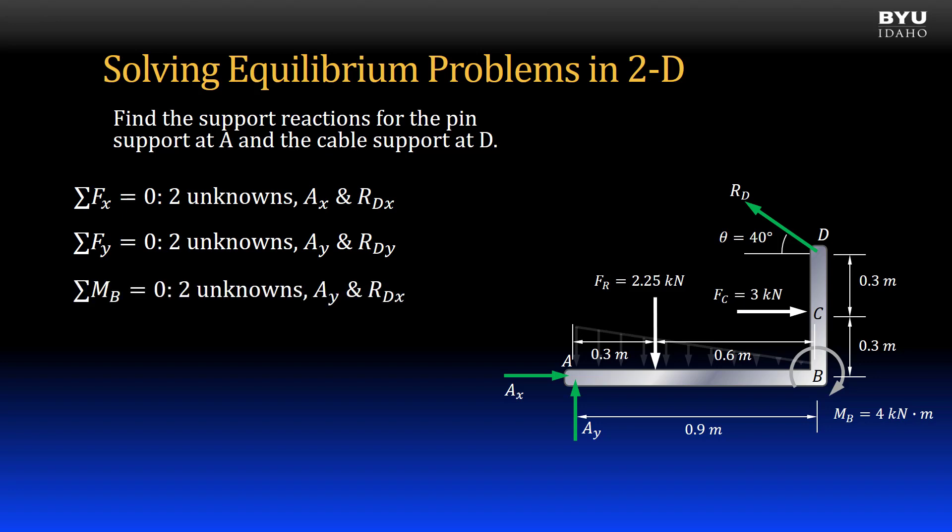If I sum moments to zero about point B, there will be two unknowns in my equation: Ay and the horizontal component of RD. Note that Ax will not be in the equation because the line of action of Ax passes through point B. The same is true for the vertical component of RD.